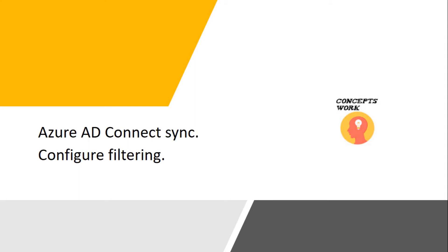Hi guys, hope you all are doing well. In this video I'm going to talk about the types of filtering available with Azure AD Connect to get the best results as per your business requirements. If you don't want to sync any user object or a group object, how you can achieve it. This video will be a summary of how many types of filtering are available, and then I will be covering each type specifically in a different lab video.